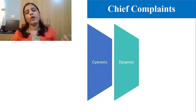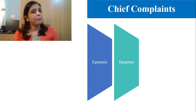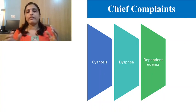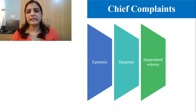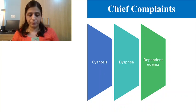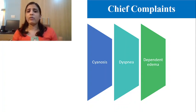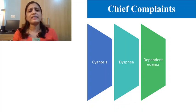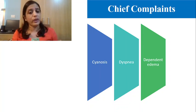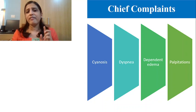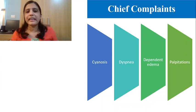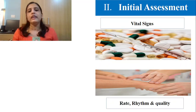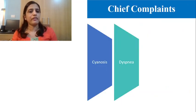Dyspnea is a classic feature in heart failure — including paroxysmal nocturnal dyspnea. Even in valvular heart diseases, patients may complain of breathing difficulty. Dependent edema means swelling occurring by gravity: if a patient sits with legs dangling down, edema develops in the lower limb after some time. Dependent edema is a classic feature of right-sided heart failure. Palpitations — another usual complaint in valvular heart diseases like mitral regurgitation — means the patient can hear his or her own heartbeat.